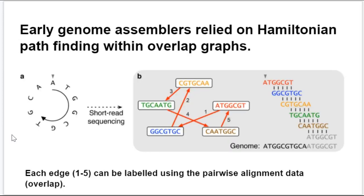Let's get back to DNA sequence analysis. Early genome assemblers — the first generation of them — relied on Hamiltonian paths to find sequences and connect reads together into contiguous fragments known as contigs or larger structures. Here we have a circular genome, maybe from an E. coli. This is just a made-up figure, but there are plenty of circular genomes. Short read sequences might generate these fragments, and if we stack these up by overlap, we can come up with a consensus.